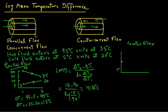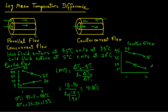Again, we draw the axes: Y-axis for temperature, X-axis for locations 1 and 2. The temperatures are 5, 20, 35, and 95. The hot fluid enters the counter-flow heat exchanger at 95°C and exits at 35°C. Because this is counter flow, the cold fluid enters at location 2 at 5°C and increases to 20°C. So delta T1 is 95 minus 20 = 75°C, and delta T2 is 35 minus 5 = 30°C.